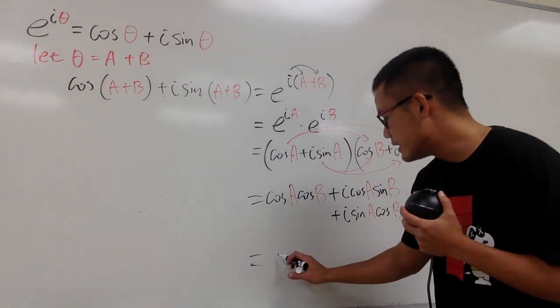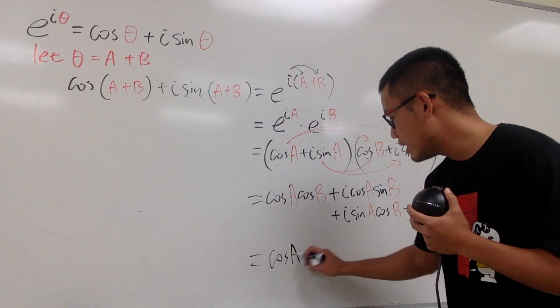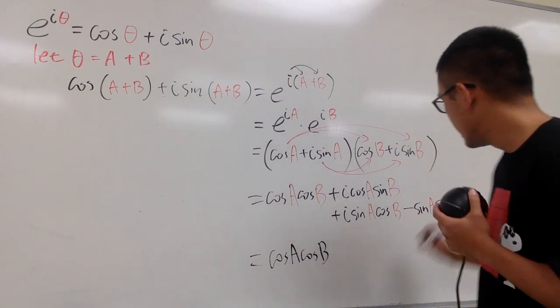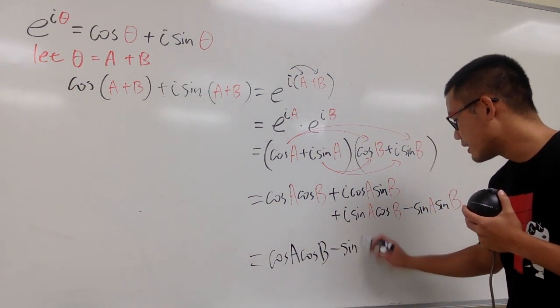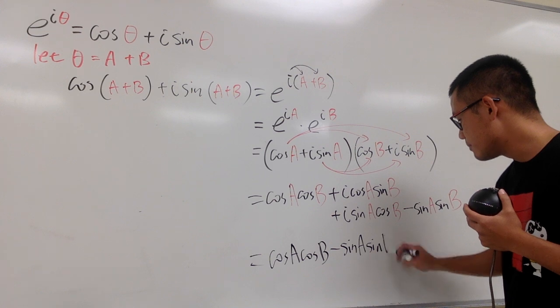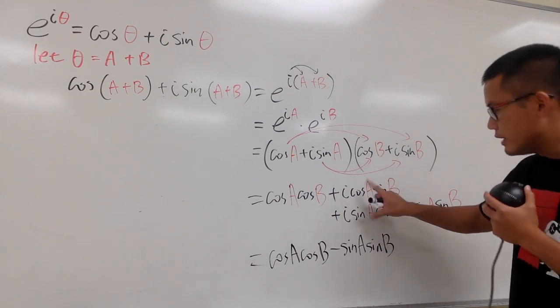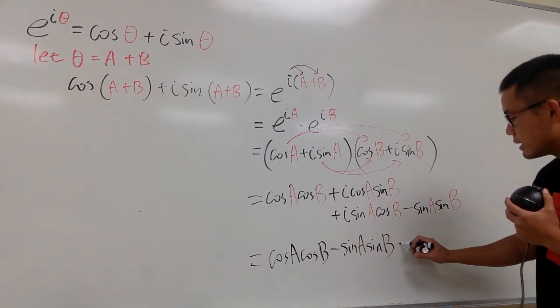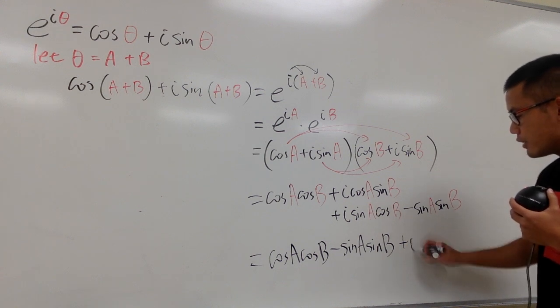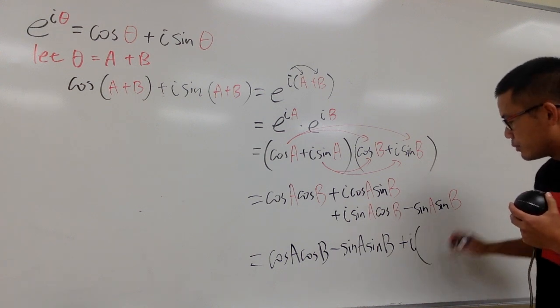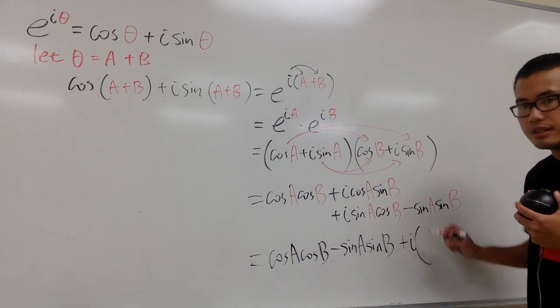Well, let me just write this down first that this is cosine a, cosine b, and then we'll minus sine a, sine b. And then for these two, they have the i, so let me go ahead and do this. Say plus, and I will factor out the i right here. All right? And I'll put parentheses, and I'll put this right here inside of the parentheses.